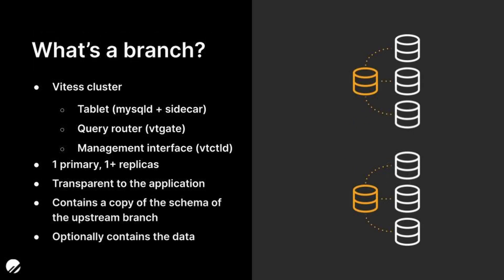So what is a branch in PlanetScale? A branch is essentially the same thing as a database — it is a Vitesse cluster with the exact same three components, one primary, and one or more replicas depending on the plan, and it all happens transparently to the application. When a branch is created in PlanetScale, the schema of the upstream database is automatically copied to that branch so you can connect to it and manage it.